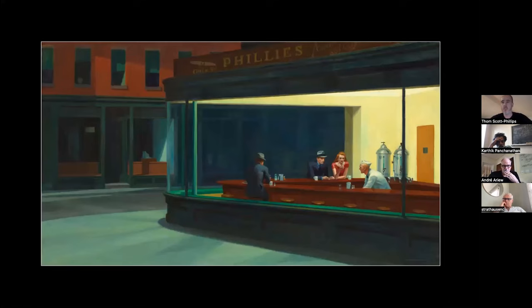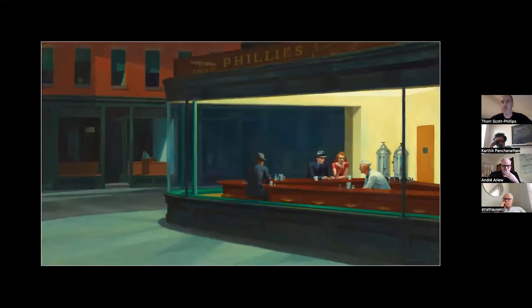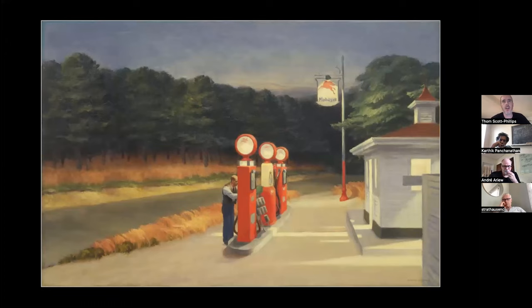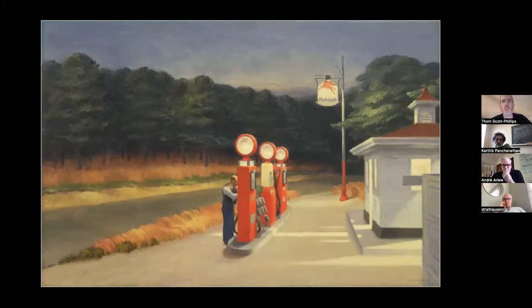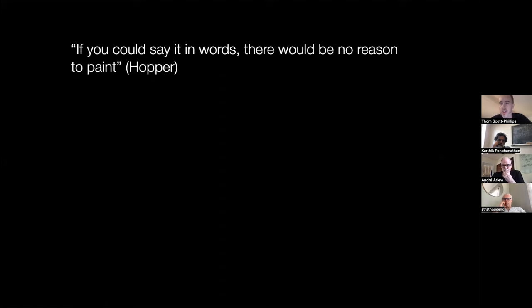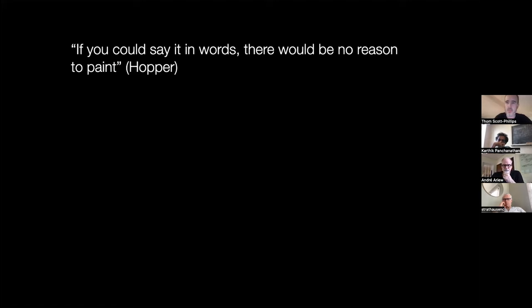Some of you will know Nighthawks by Edward Hopper — those who've been to the Art Museum of Chicago certainly will, because it's on display there. Hopper's work all has very plain titles. The scenes are very simple — often isolated individuals. Even when there's more than one individual, there is a sort of psychological sense of isolation associated with Hopper's work. Hopper often declined to talk about what his paintings meant, but when pushed in an interview, he did say: 'If I could say it in words, there'd be no reason to paint.' The whole point is he can't do it in the top corner of the space — he has to find some other way to express what he wants to express.